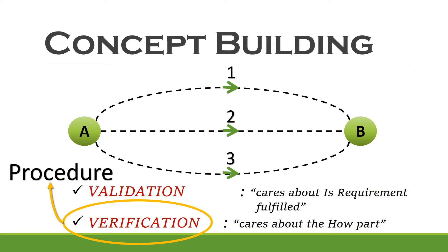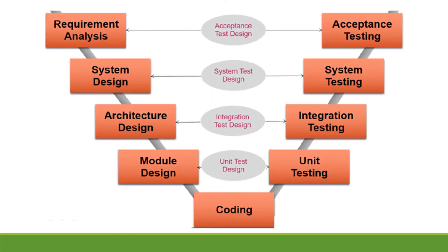With this example, I think you have already got a fair idea. Let's see another situation and try to understand where Verification and Validation are needed. We have already discussed software development life cycle models on this channel — I will provide the links in the video description, you can check them out later. This one is the classical V-model for software development.